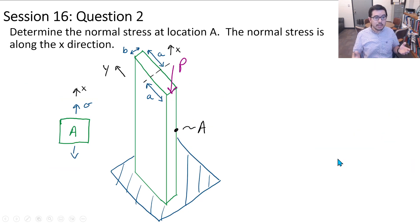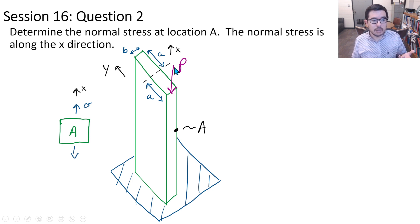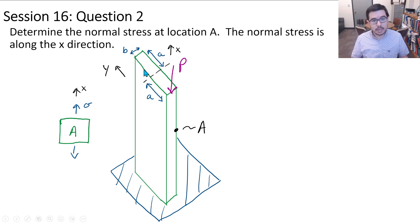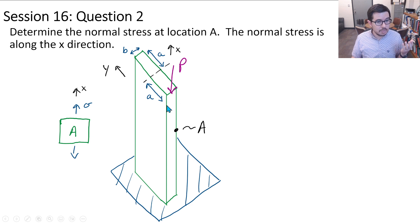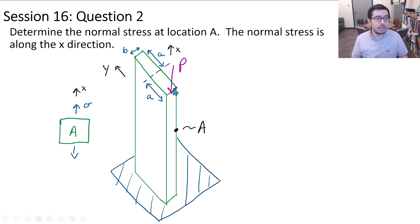Here is the second question for this portion of the session. We have a normal stress at location A in the x direction due to a load P applied not at the center but at an edge, a distance a from the neutral axis. Think about which stresses to superpose to describe the normal stress in the x direction at location A, keeping in mind that P is applied eccentrically. If the result is in compression, the value could be negative.